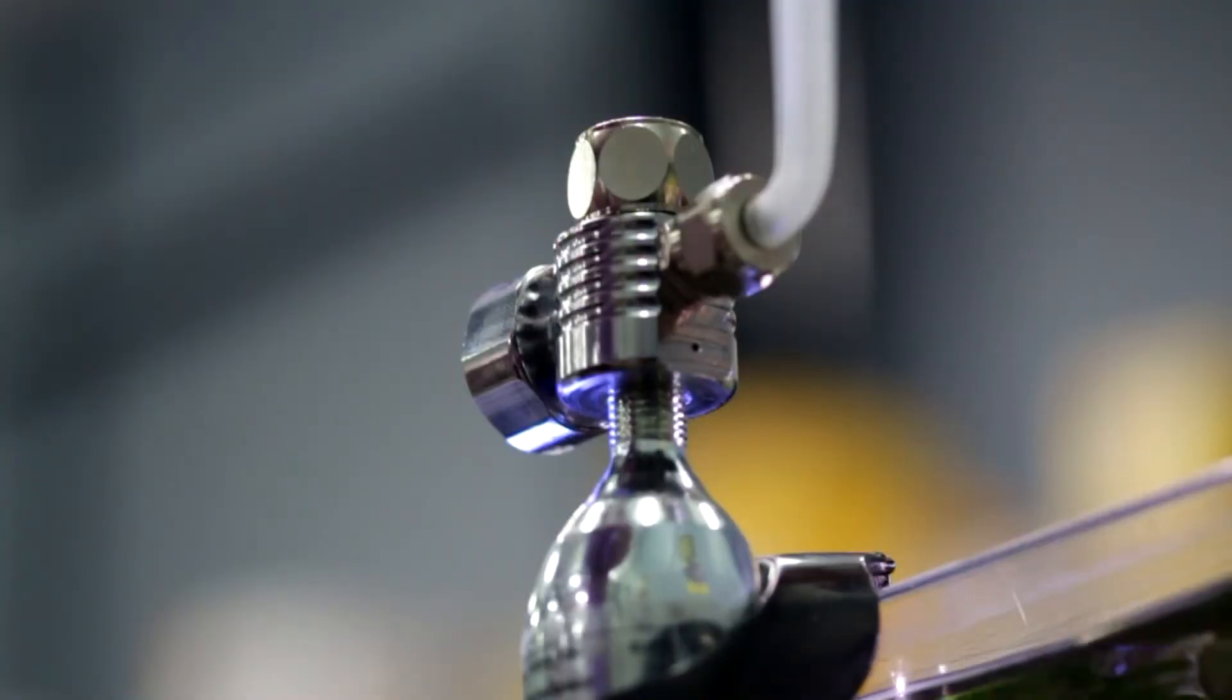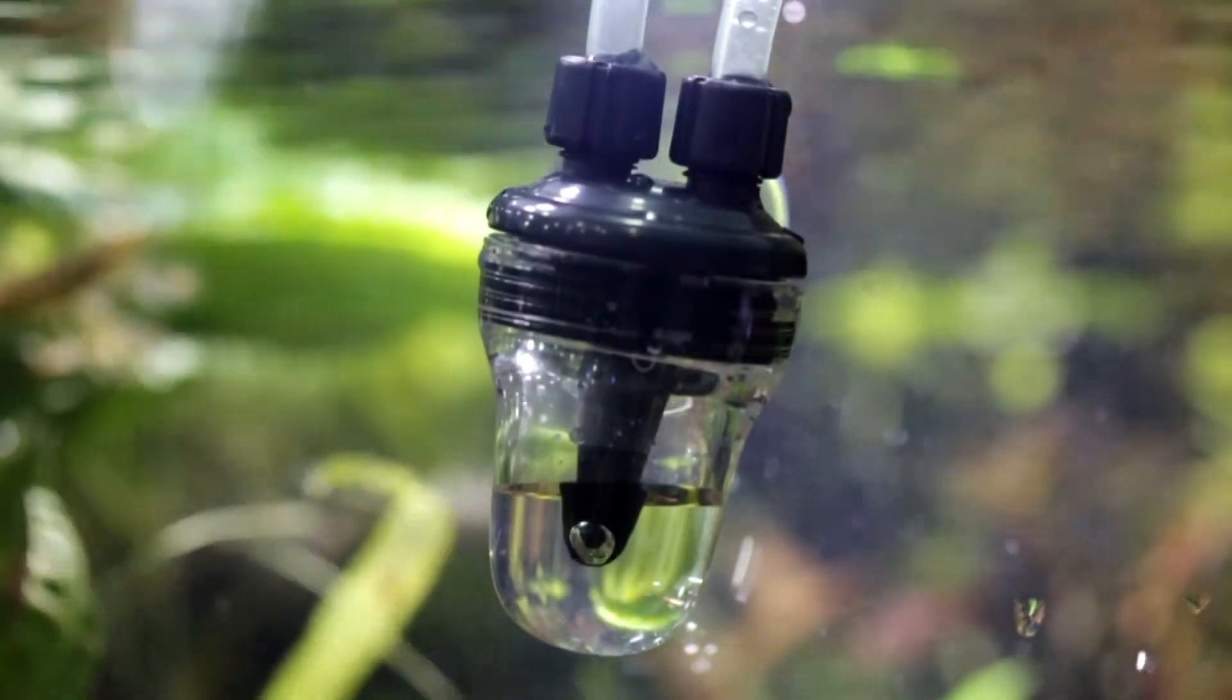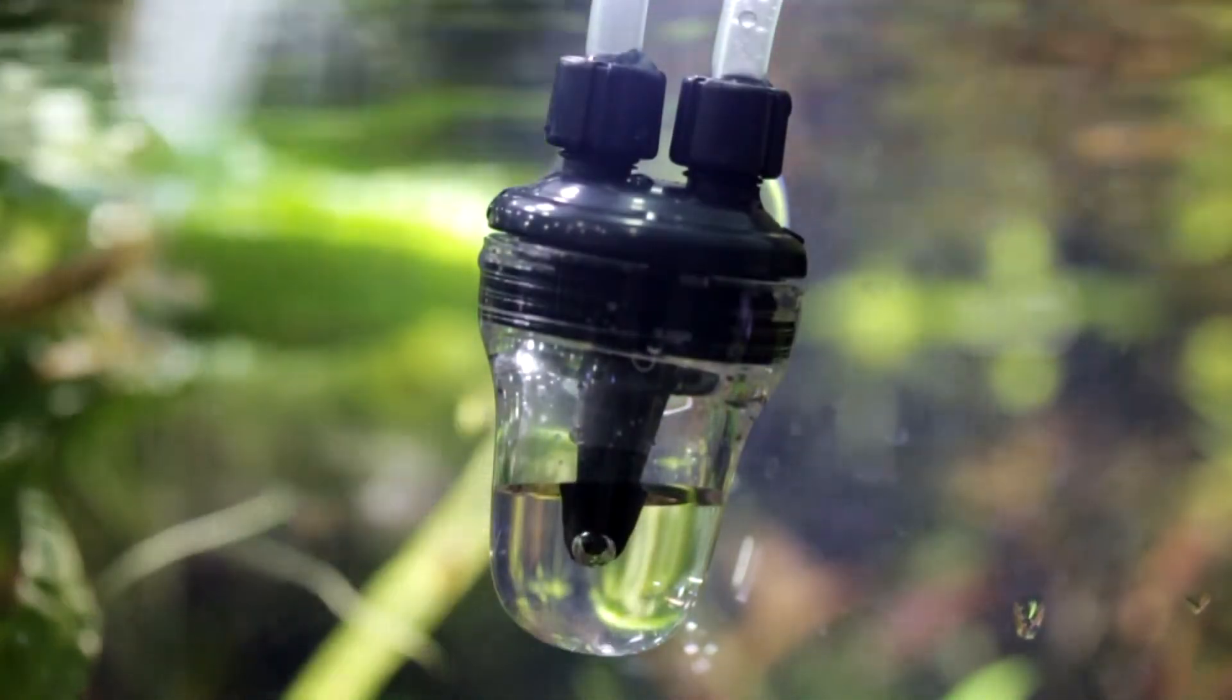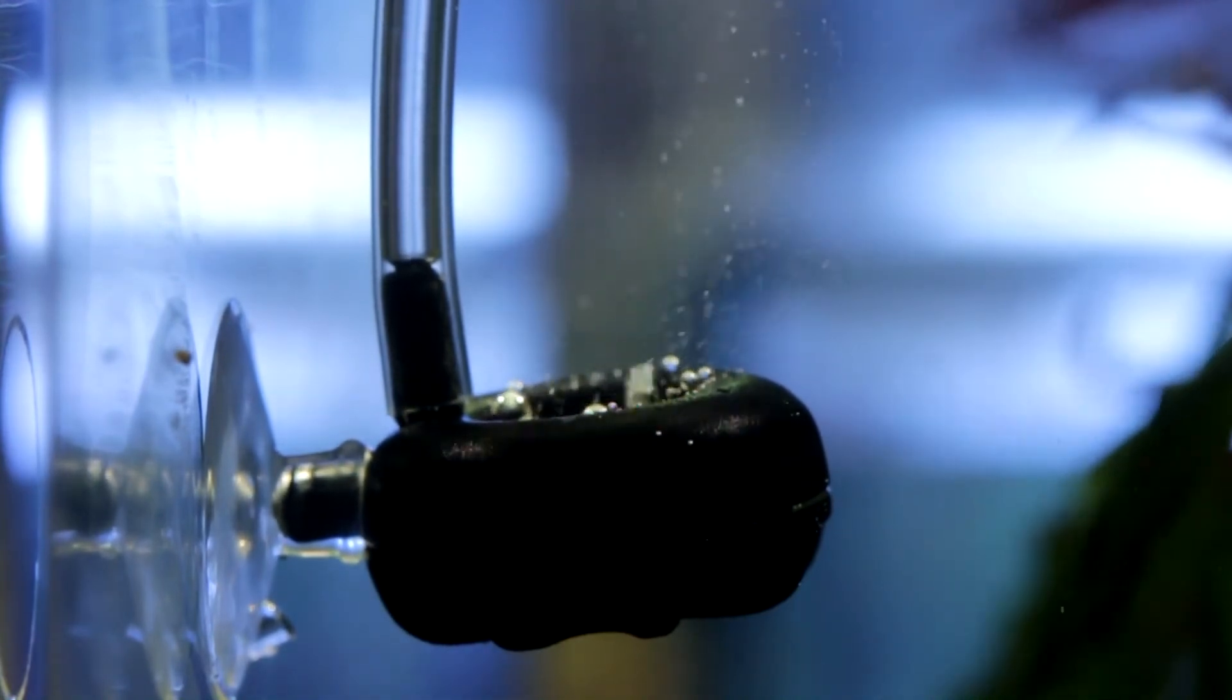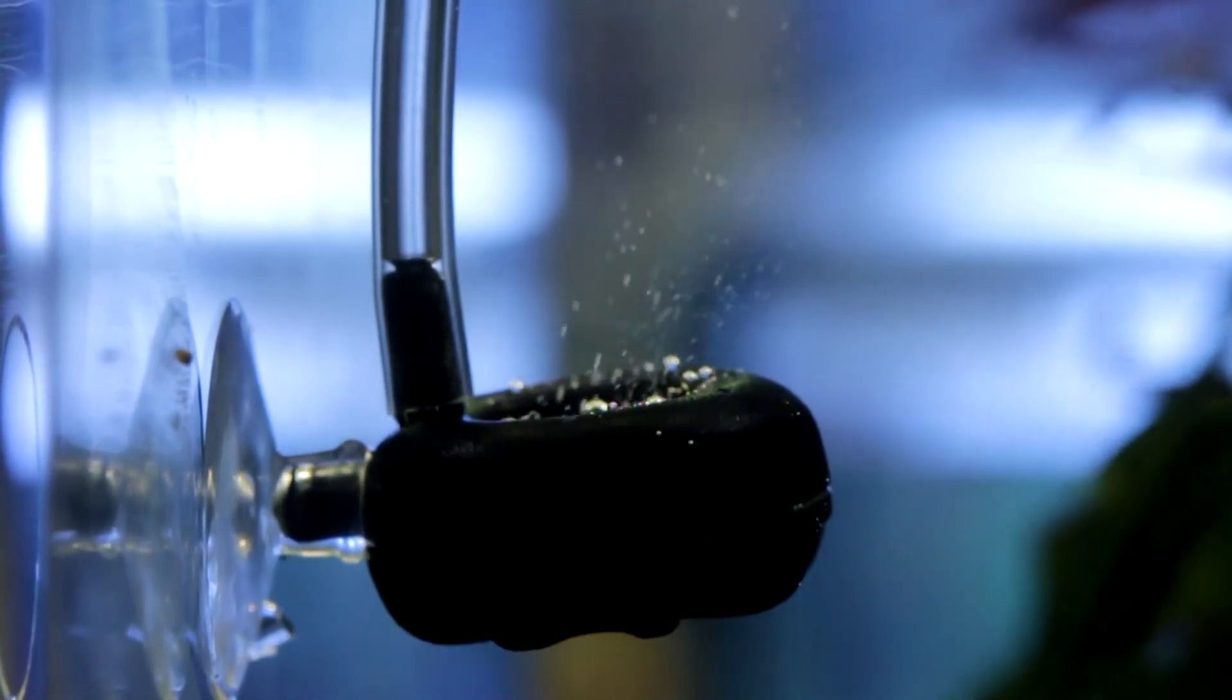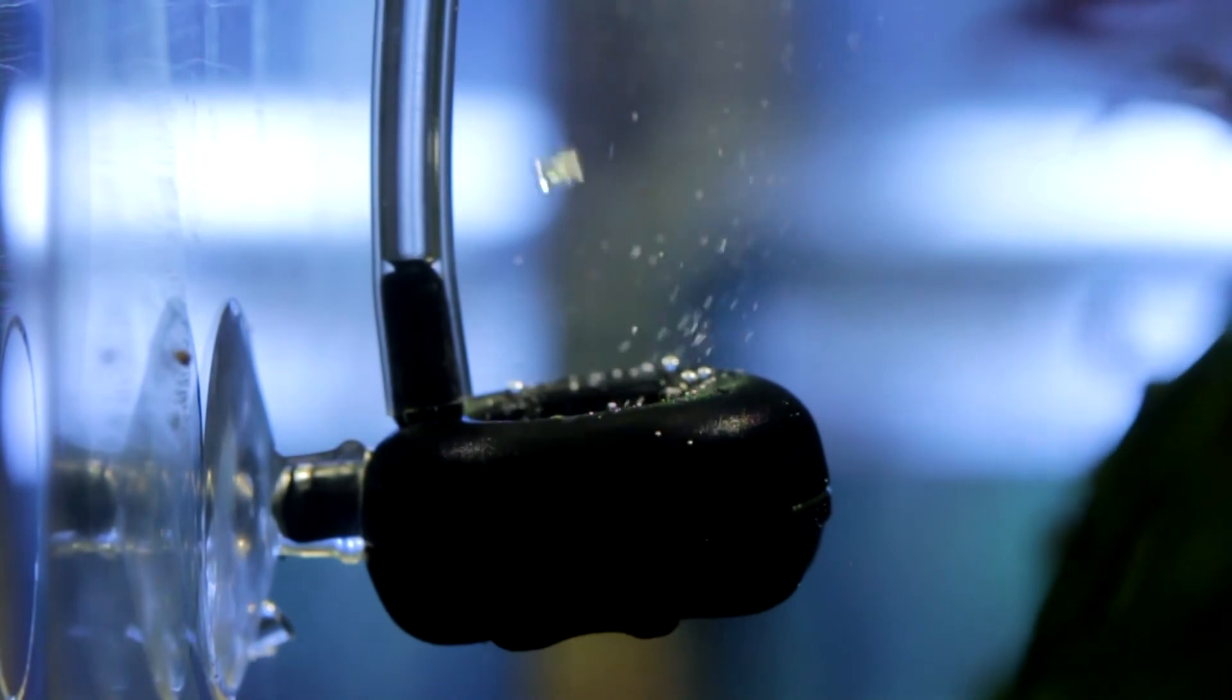The last thing we have to do is turn it on. This here is the bubble counter. The bubble counter is how you regulate the amount of CO2 actually going into the system. You usually want about one to two bubbles per second to give you the proper CO2 diffusion rate.